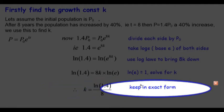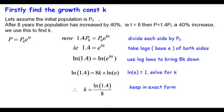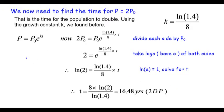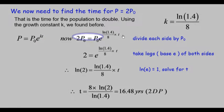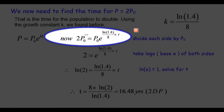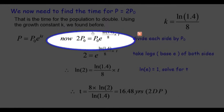Now we need to find the time for when the population is 2P₀, double the initial population. We use the k we found before. We substitute all this back in again, quite similar to the earlier section, but we're now solving for t as opposed to k.